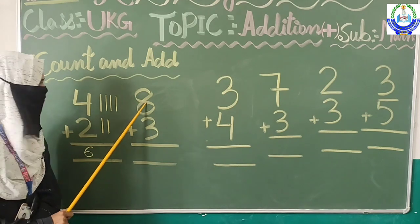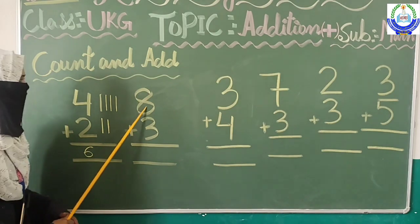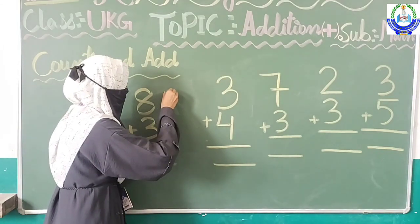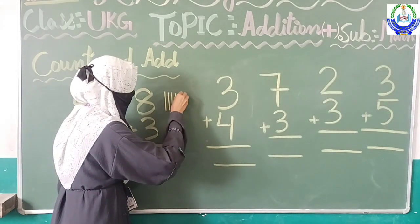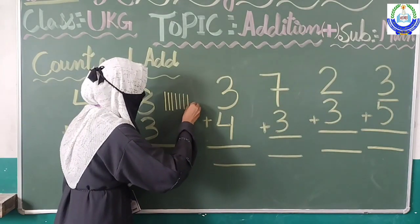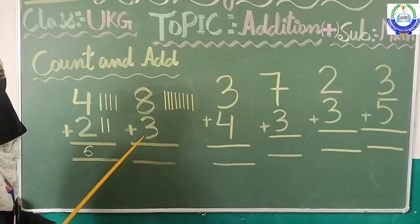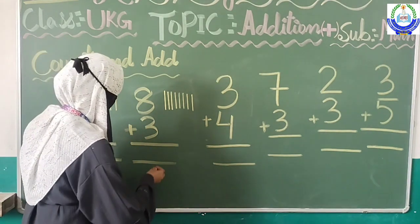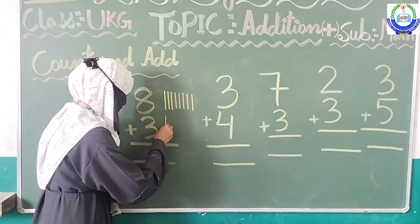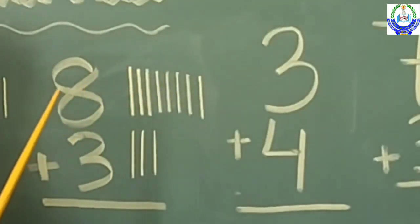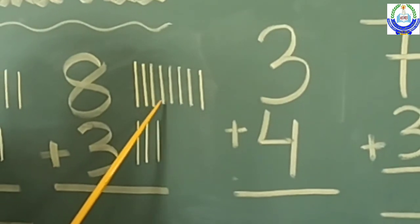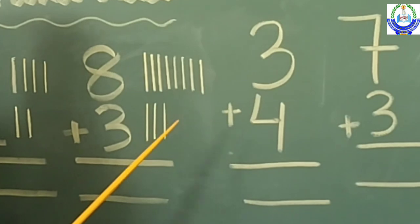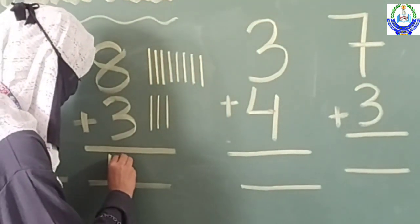Move to the next. Which number is here, students? This is eight. Let's draw eight lines: one, two, three, four, five, six, seven, and eight. Next, which number is here? This is three. We will draw three lines: one, two, three. Now let's count them all: one, two, three, four, five, six, seven, eight, nine, ten, and eleven. We will write here: eleven.